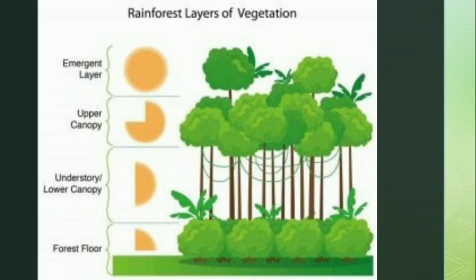A few trees are very tall and rise above the canopy. Look at this diagram — what do you see above the canopy? The emergent layer. There are many vines that climb up the trunks of trees to reach the canopy and get the sunlight they need. And few plants grow on the dark forest floor.